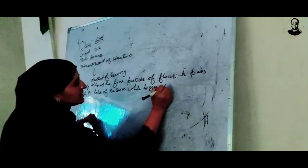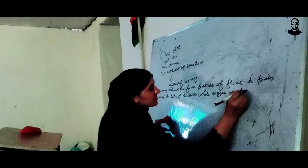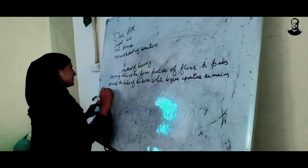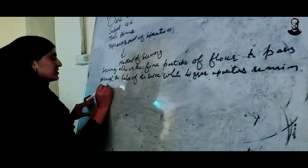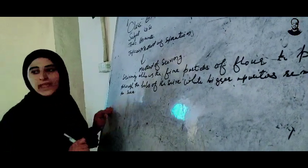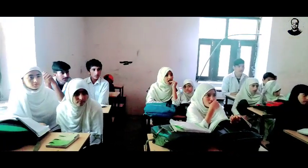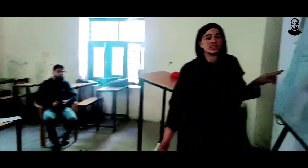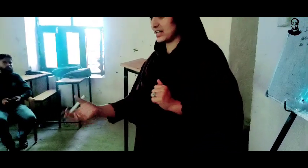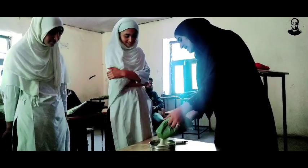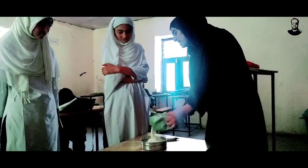Bigger impurities remain on the sieve. Do you understand? The sieve is used to separate dust and bran. If you have a sieve in practical shape, you can do this. The bigger impurities will separate.